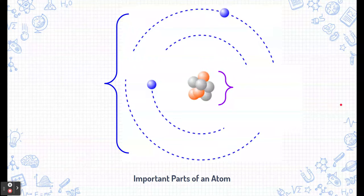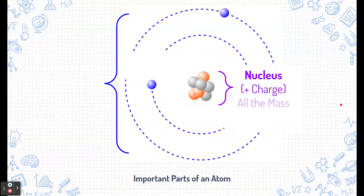So what do we know about an atom? Let's review some of the parts that we're familiar with, starting with the nucleus. The nucleus, or the center of the atom, has a positive charge overall. Now this is where all the mass is located, even though the volume of the nucleus is very small compared to the size of the atom.